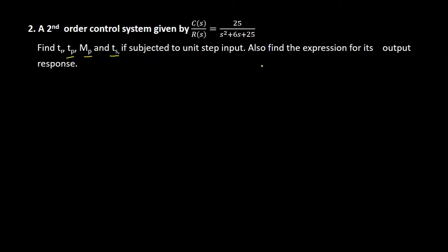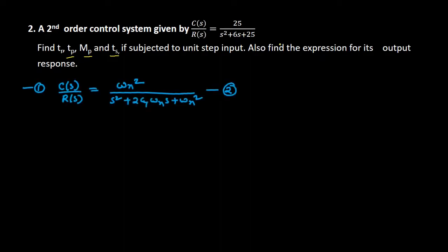First, we will write the standard equation of the closed loop transfer function for a second order control system, which is equal to omega_n squared divided by s squared plus 2·zeta·omega_n·s plus omega_n squared. The given closed loop transfer function is C(s)/R(s) equal to 25 divided by s squared plus 6s plus 25 — let this be equation number one.